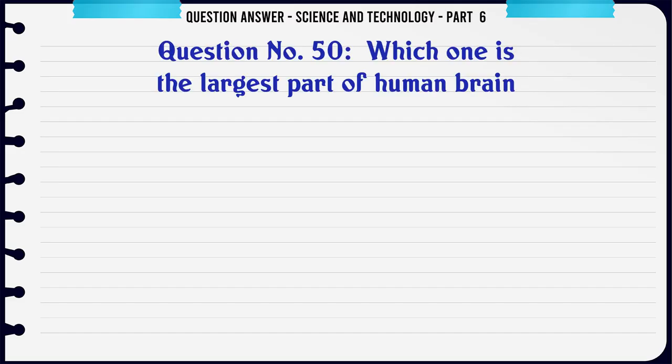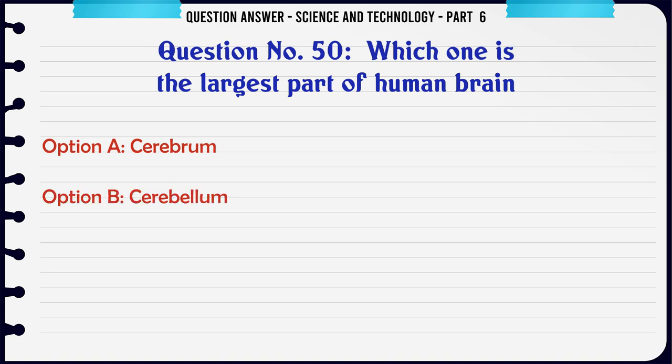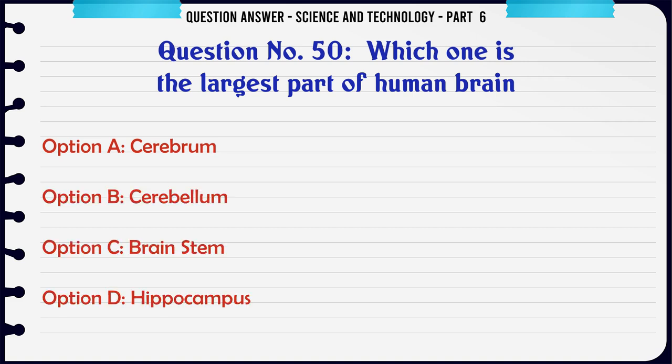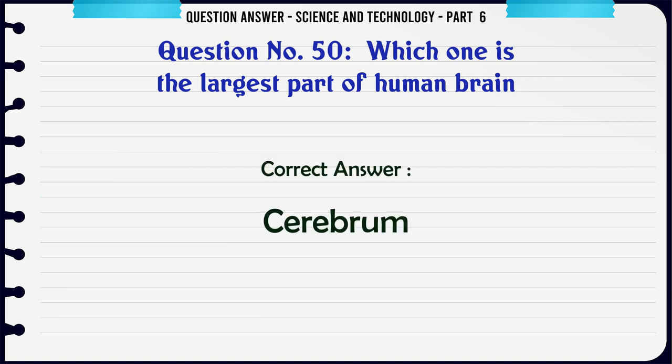Which one is the largest part of the human brain? A. Cerebrum. B. Cerebellum. C. Brainstem. D. Hippocampus. The correct answer is Cerebrum.